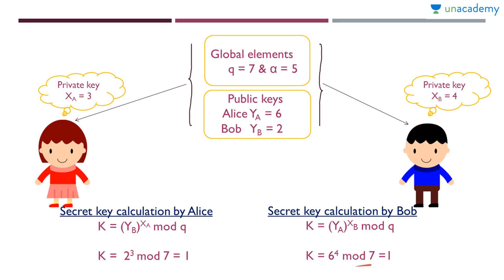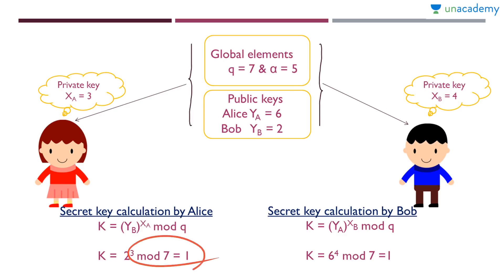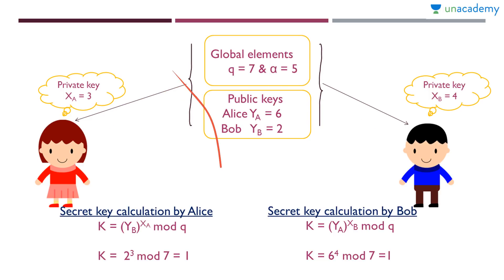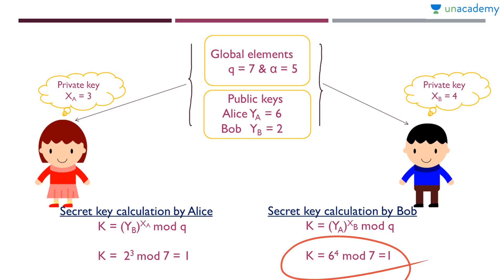You can verify: 2³ mod 7 = 1 and 6⁴ mod 7 = 1 — both equal 1. Without even passing the keys through any channel, both parties calculated the same secret key. That is the security of the Diffie-Hellman key exchange algorithm: using some public information and some private information, both parties independently arrive at the same secret key. Thank you.